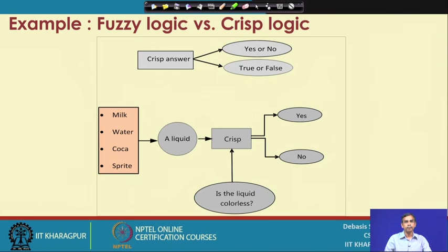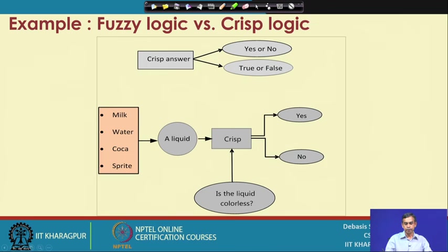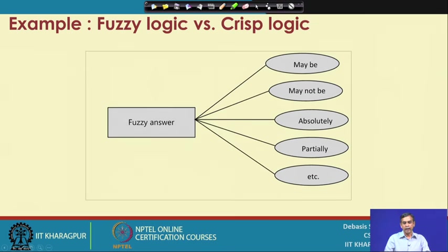As an example, suppose the question is that we have to identify a liquid. Any liquid like milk, water, Coca-Cola, or Sprite is given, and if we ask the question 'is the liquid colourless,' you have to give the answer in terms of only two things — yes or no — then it is called the crisp answer. This way we can understand exactly the crisp system.